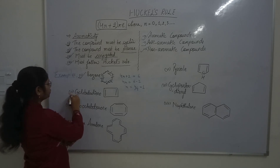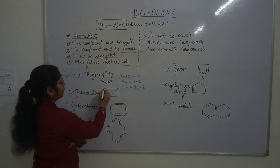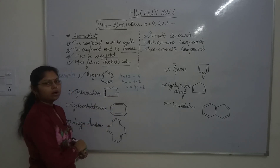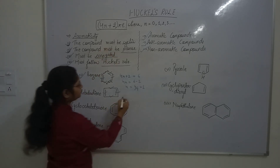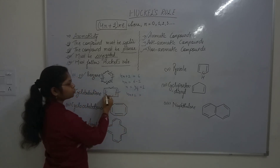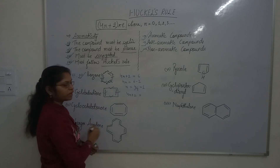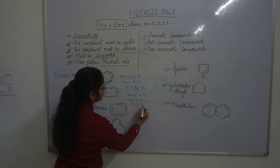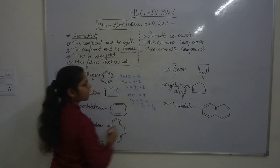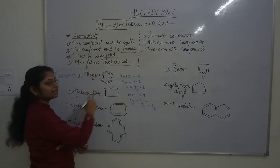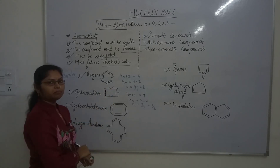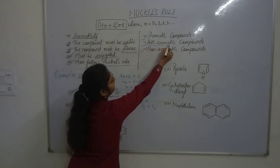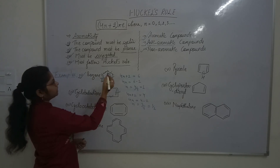Let us take another example: cyclobutadiene. It is also a cyclic compound, all carbons are sp2 hybridized, and it is conjugated with alternating double and single bonds. Checking (4n + 2) = 4: n = 1/2, which is a fraction, so it does not satisfy the aromatic rule. However, there are 2 pi bonds meaning 4 pi electrons, which fits the 4n system, so cyclobutadiene is anti-aromatic.